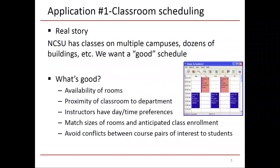Some examples. Application number one: you want to schedule classrooms. Here's a real story. NC State has classrooms, classes, and physical buildings on multiple campuses — of course, buildings on Centennial Campus, Main Campus, etc. There are dozens of buildings on each campus, multiple classrooms typically per building, and we want a good schedule.